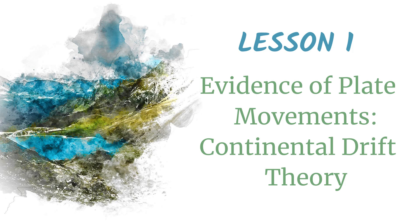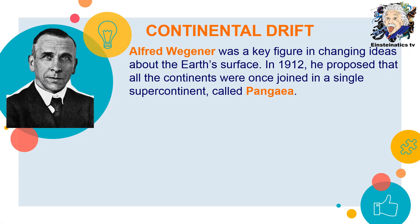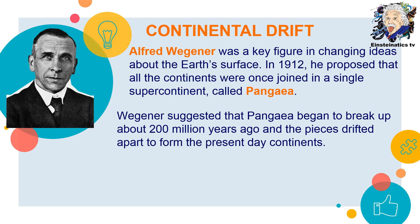Let's start with Lesson 1, which deals with evidence of plate movements — specifically the continental drift theory. Continental drift is a theory proposed by Alfred Wegener, who was a key figure in changing ideas about Earth's surface. In 1912, he proposed that all the continents were once joined in a single supercontinent called Pangea, and that Pangea began to break up about 200 million years ago, with the pieces drifting apart to form the present-day continents.